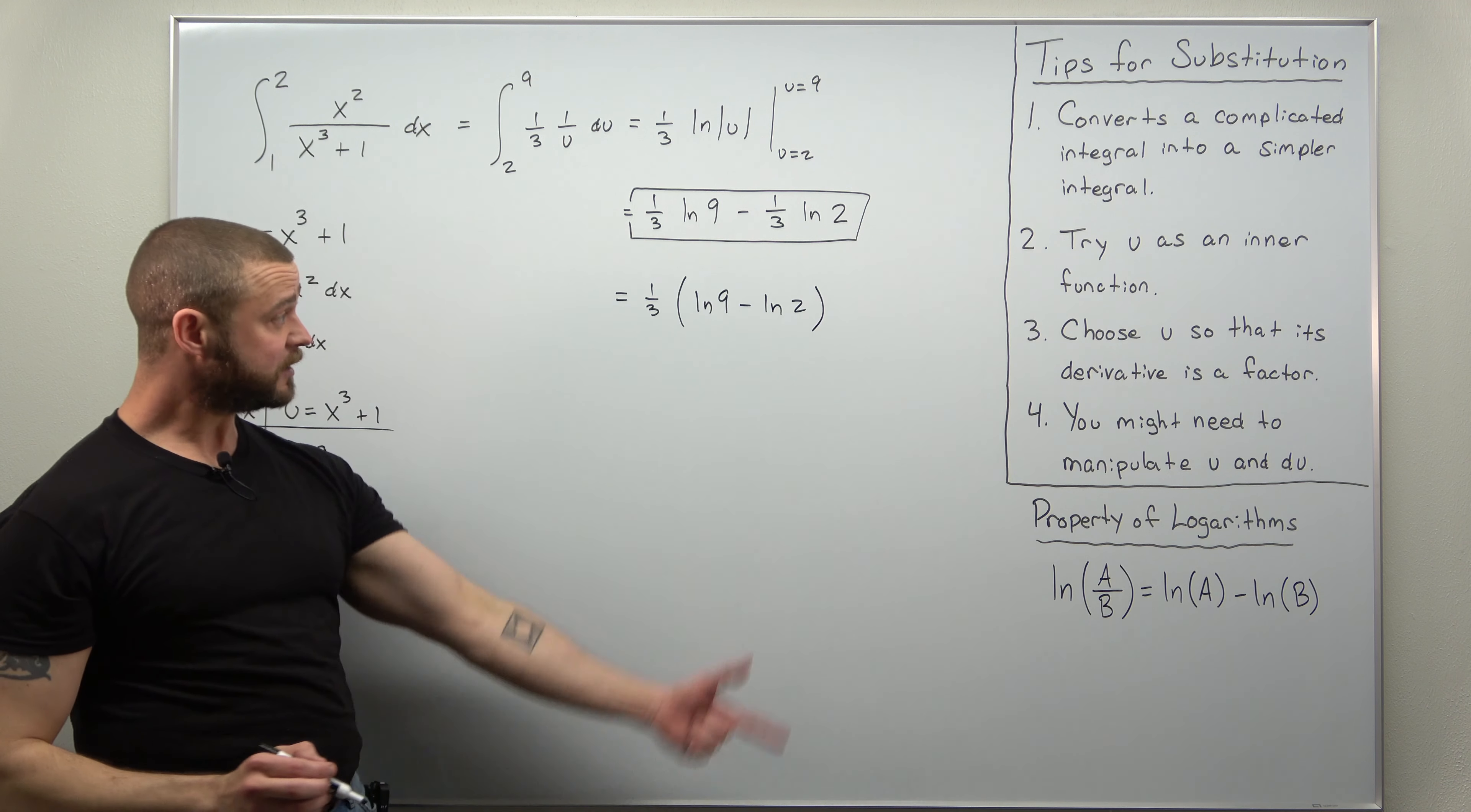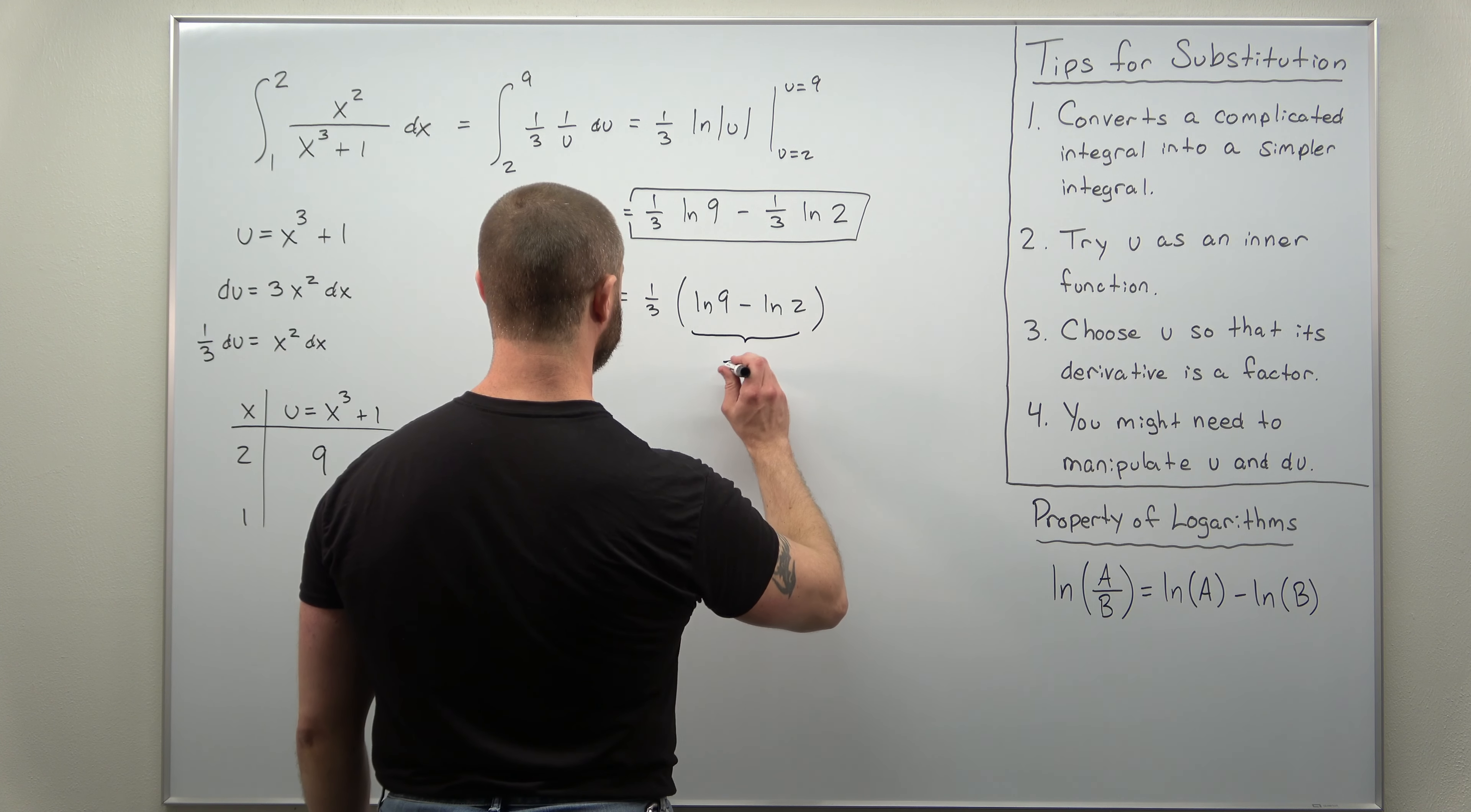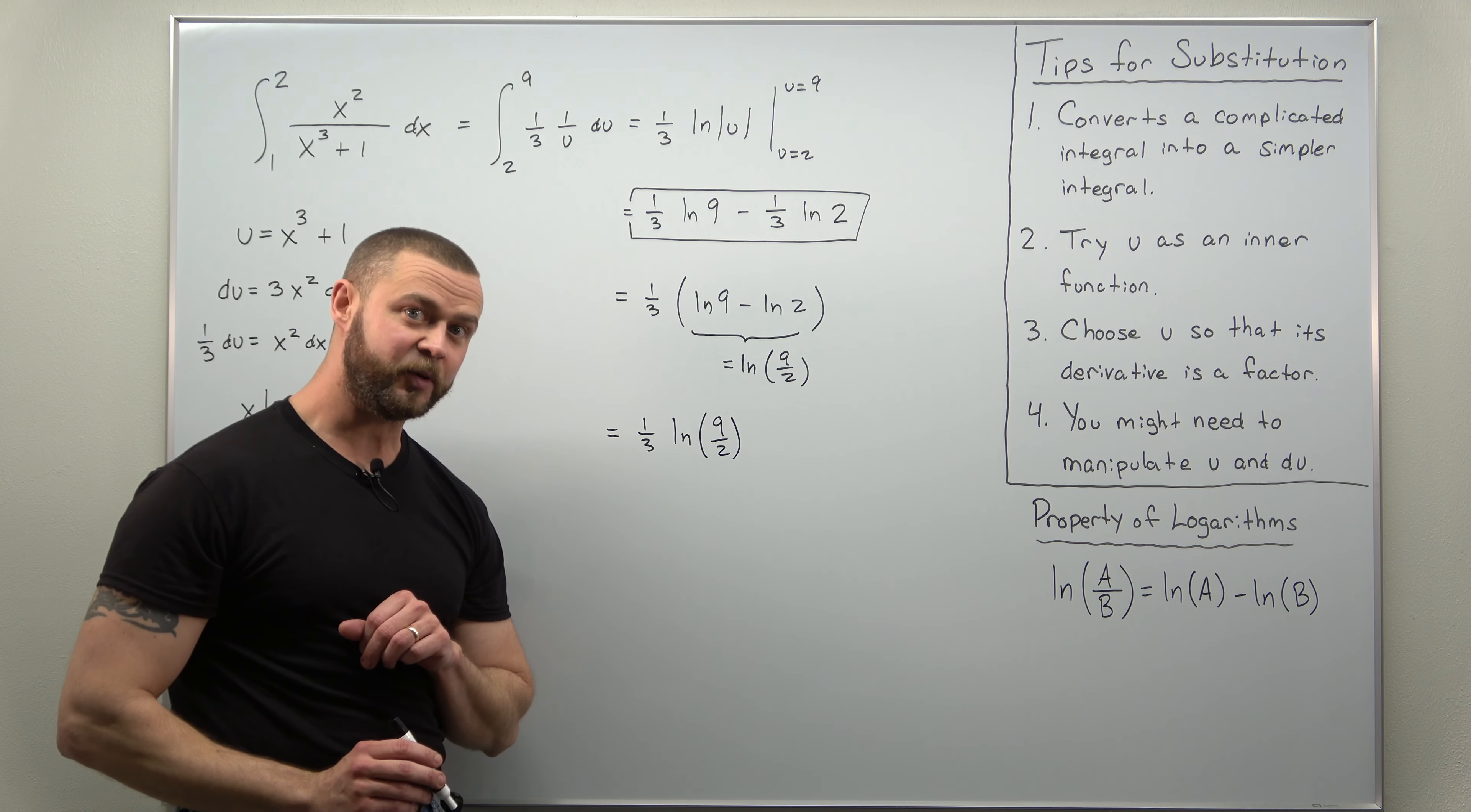And if you want to, since we have a difference of logarithms you can apply one of your basic properties of logarithms backwards. A difference of logarithms can be expressed as a logarithm of a quotient or a fraction. So this inside here you can write that as natural log of 9 over 2. So your answer here you could write it as 1 third times natural log of 9 over 2. And that is another acceptable answer.